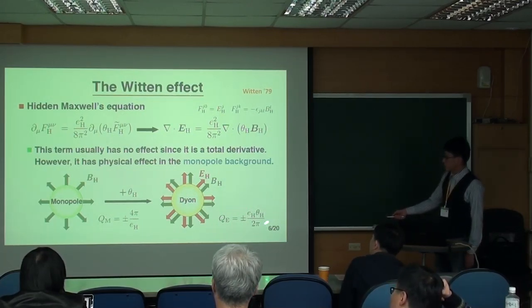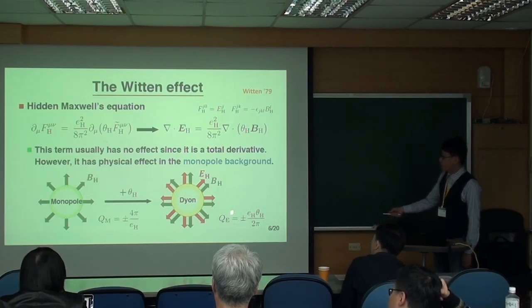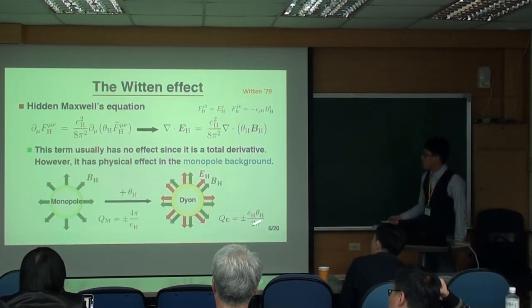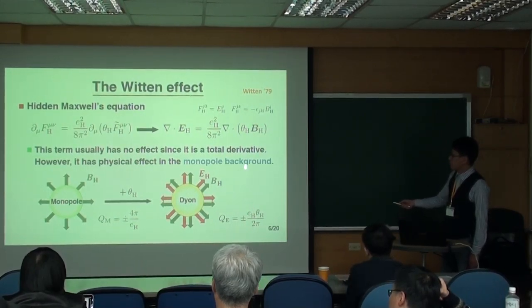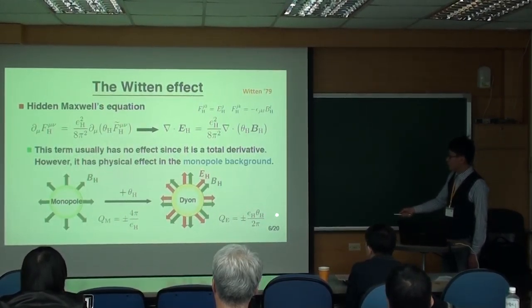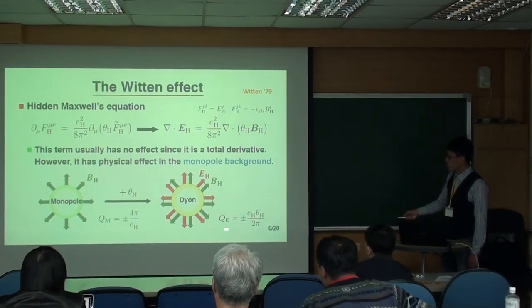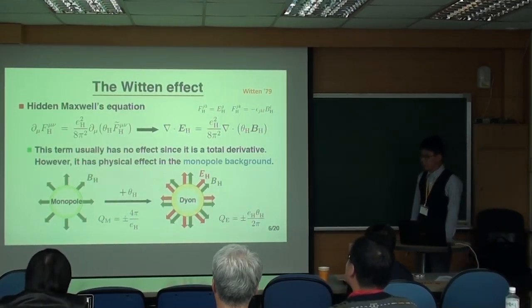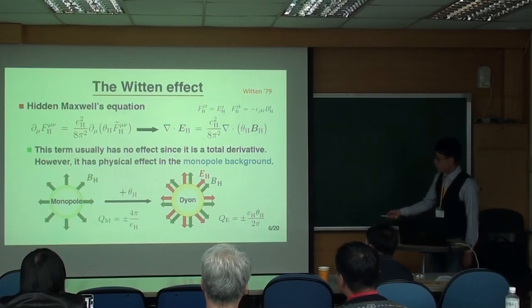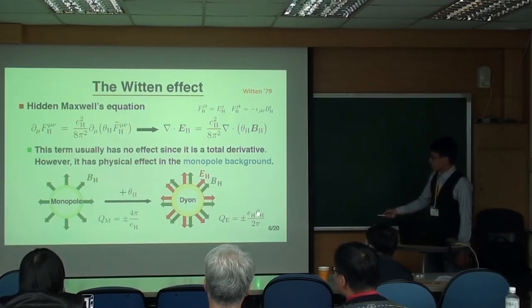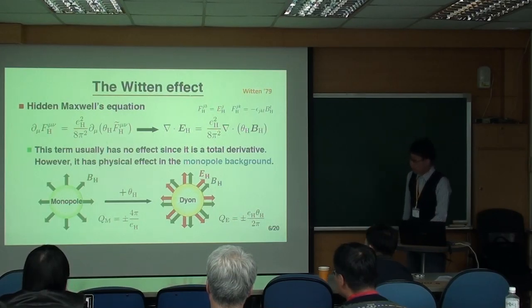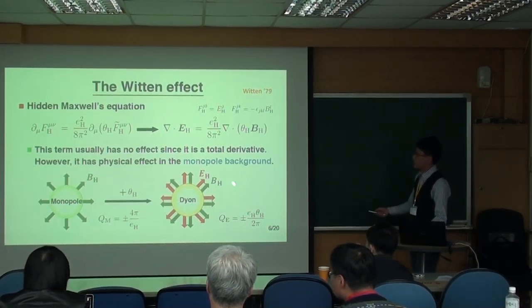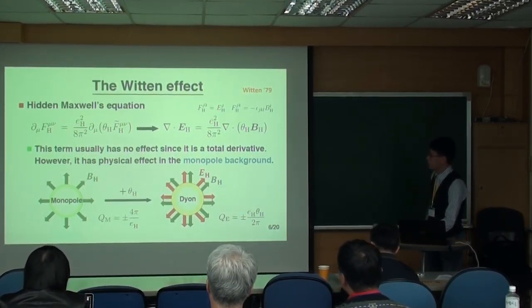This is the electric charge of the monopole. If you look at this equation, you can already understand that this relation is also true if theta is a field, right? Because theta contributes as a constant to the action. So this is the Witten effect, which explains the reason why the monopole also has electric charge.